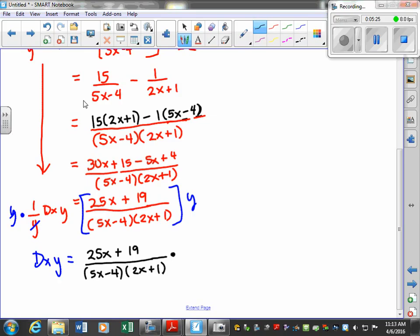So we want to multiply that times y. So y is 5x minus 4 to the third power, right? They gave it to us as a cube root. And in the denominator, we have 2x plus 1 to the what power? 1 half power.